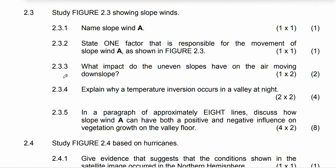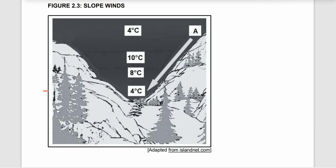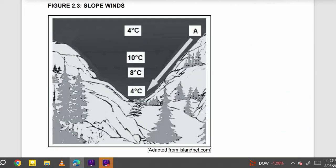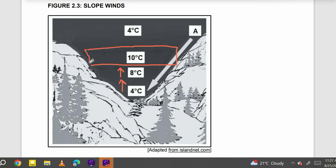Let's move to 2.3.4, which says: explain why a temperature inversion occurs in a valley at night. We need to understand temperature inversion. Normally temperature decreases with altitude, but in a temperature inversion, temperatures increase with altitude — meaning there are warmer temperatures at a higher level than below.